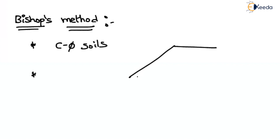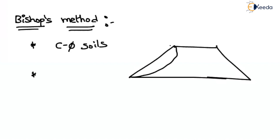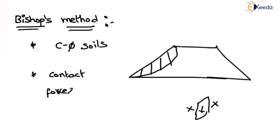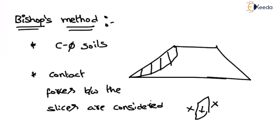If you consider a finite slope, divide it into slices, and consider one slice, the forces considered were self-weight and shear strength of the soil, but no contact forces between the contact surfaces. In reality the contact forces will exist. In Bishop's method, the contact forces between the slices are considered. As the contact forces are also considered, the problem becomes a lengthy one, and that's why it cannot be asked in the GATE exam.